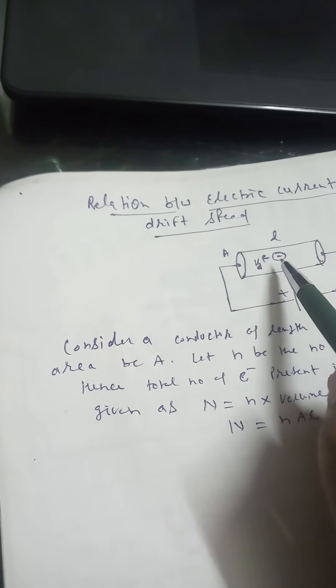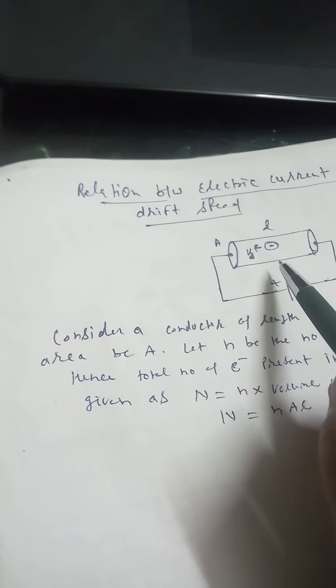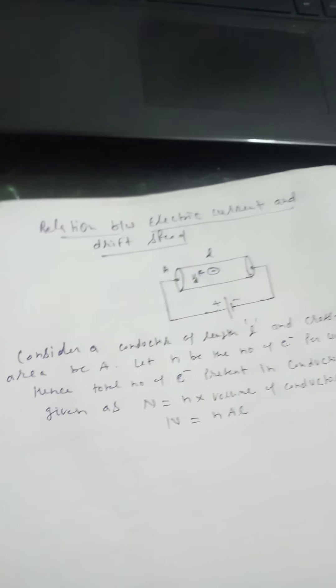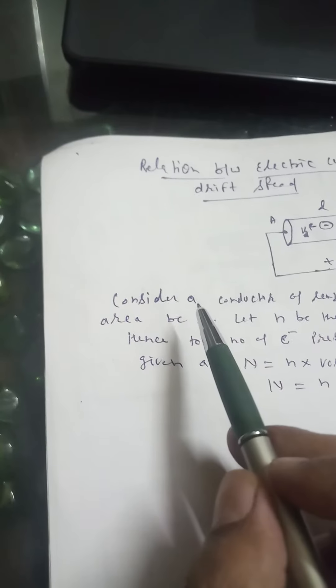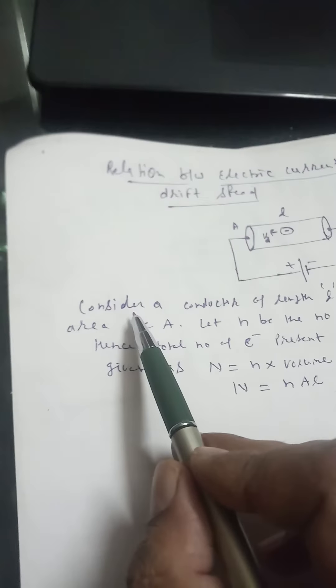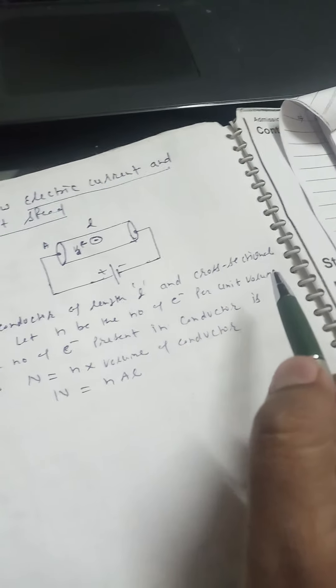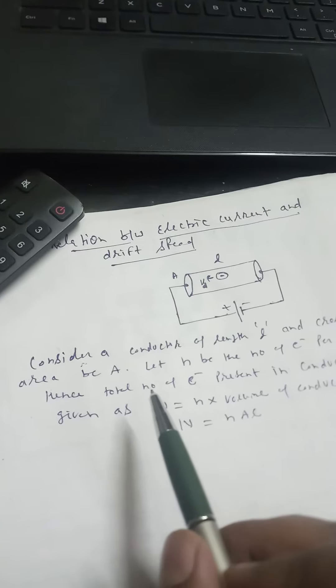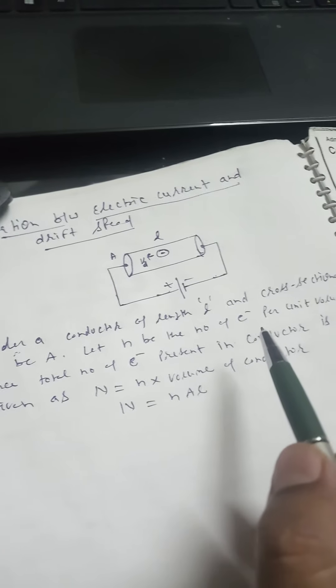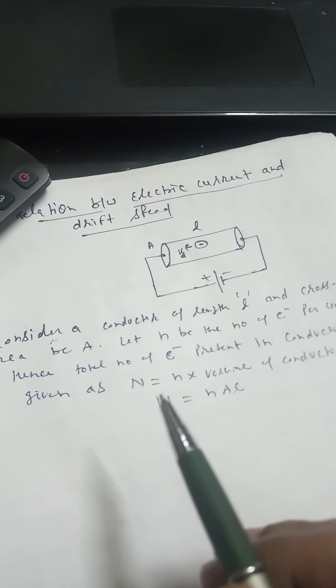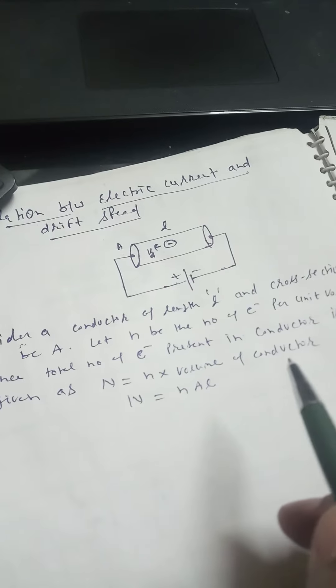And n be the number of free electrons per unit volume. Consider a conductor of length L and cross-sectional area A. Let n be the number of electrons per unit volume. Hence, total number of electrons present in conductor is given as N equal to n into volume of conductor.